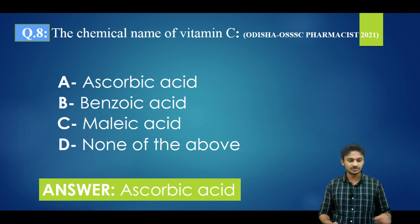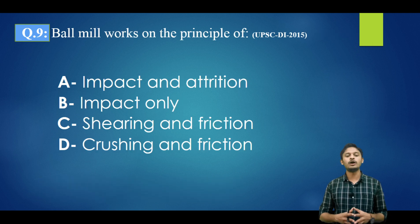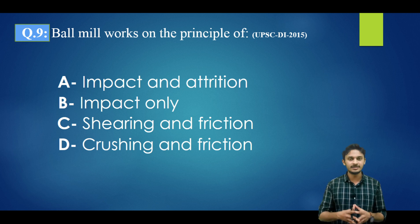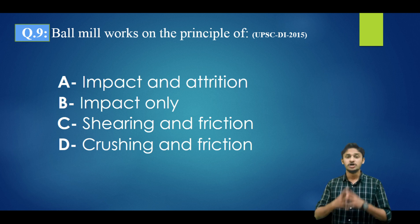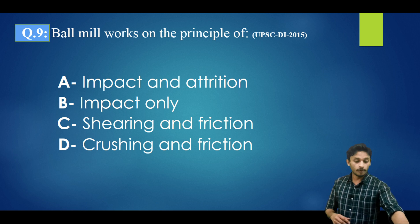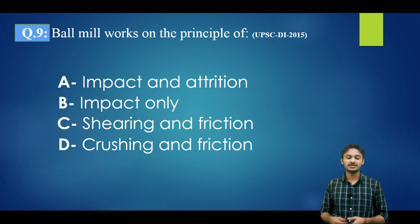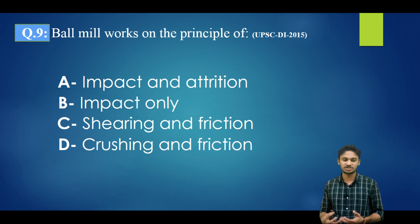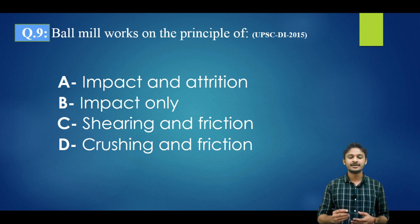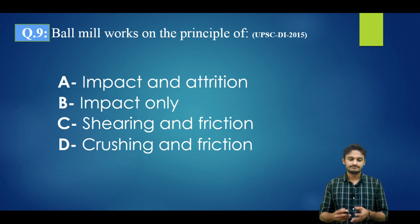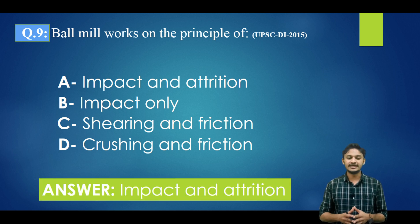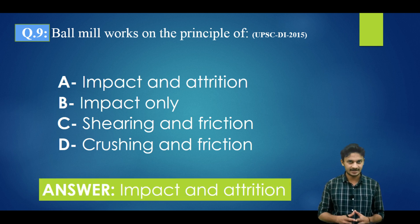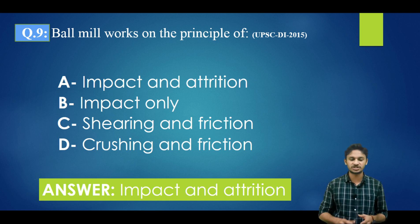Question number nine: a ball mill works on the principle of — options are: impact and attrition, impact only, shearing and friction, crushing and friction. Ball mill is used for size reduction. The correct answer is option A — impact and attrition.